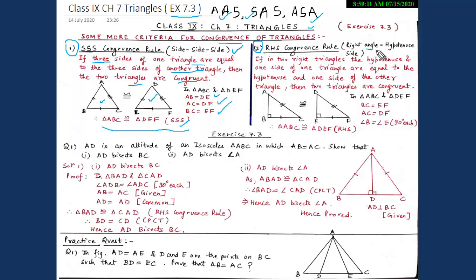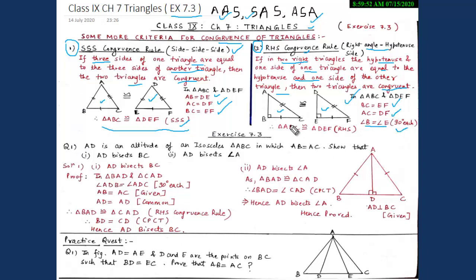Our next criteria is RHS congruency rule. The statement says that if in two right triangles, the hypotenuse and one side of one triangle are equal to the hypotenuse and one side of the other triangle, then the two triangles are congruent. Consider right triangles ABC and DEF, where BC equals EF, AC equals DF, and angle B equals angle A — both are 90 degrees. Therefore, triangle ABC is congruent to triangle DEF by the right-hypotenuse-side congruency criteria.